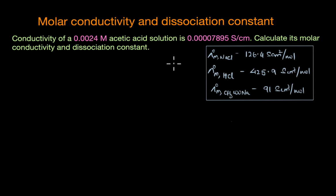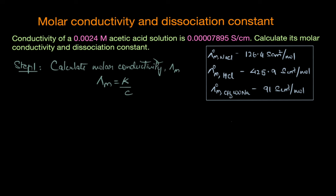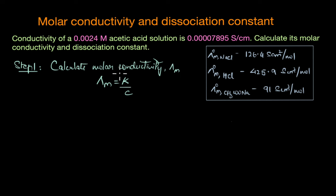Seems pretty straightforward. Let's list down the steps involved in solving this question. The first step is a straightforward one — we need to calculate the molar conductivity using this formula: molar conductivity equals conductivity of the solution in Siemens per centimeter divided by concentration in moles per liter. Both of these values are given, so we simply substitute them into this equation.